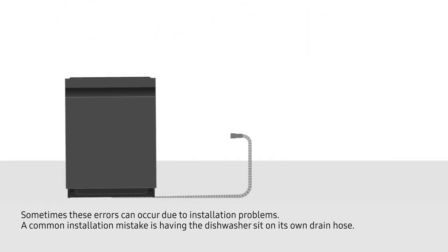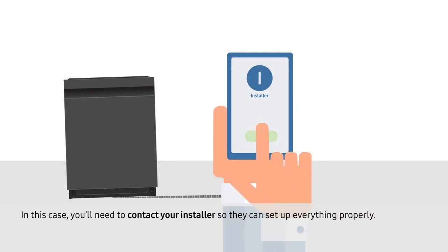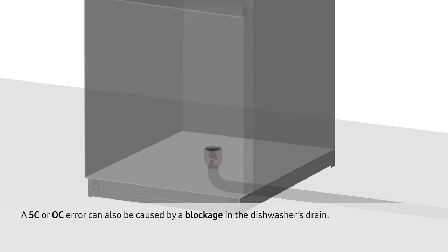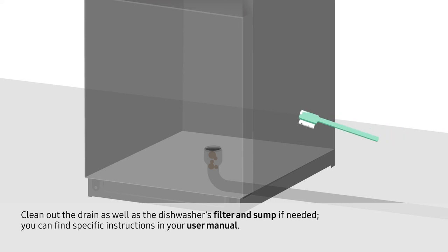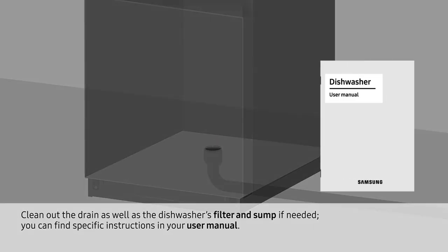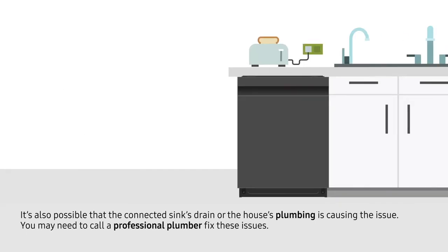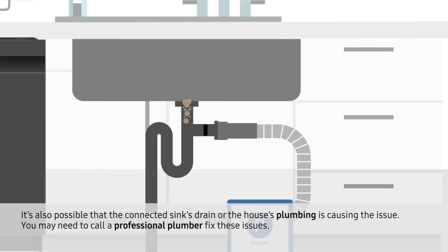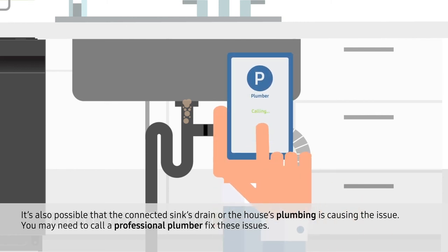Sometimes these errors can occur due to installation problems. A common installation mistake is having the dishwasher sit on its own drain hose. In this case, you'll need to contact your installer so they can set up everything properly. A 5C or OC error can also be caused by a blockage in the dishwasher's drain. Clean out the drain as well as the dishwasher's filter and sump if needed — you can find specific instructions in your user manual. It's also possible that the connected sink drain or the house's plumbing is causing the issue, and you may need to call a professional plumber to fix these.